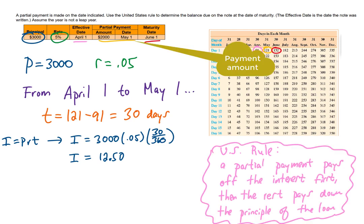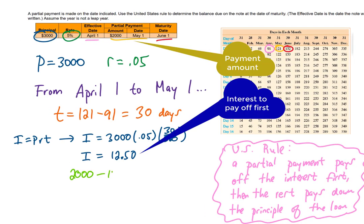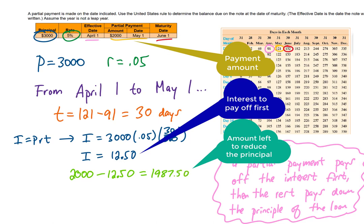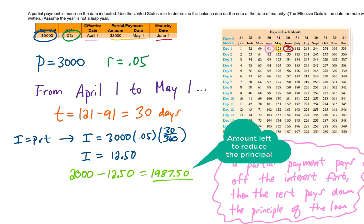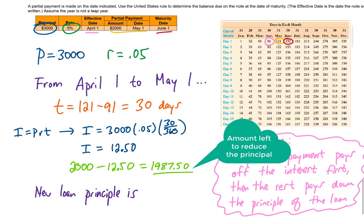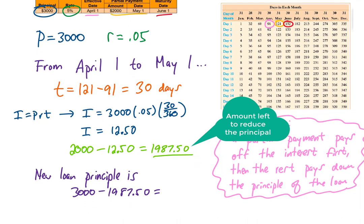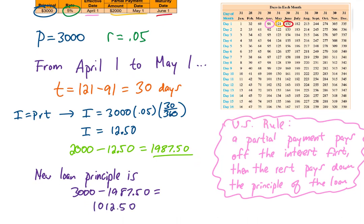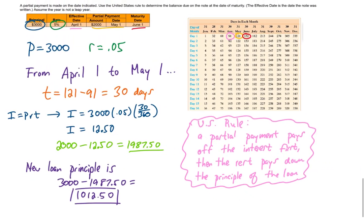What that means is from this $2,000 partial payment, $12.50 of that is going to pay off the interest that accrued. That leaves $1,987.50 to reduce the principal of the loan. The loan started at $3,000. So the new principal of the loan is going to be that $3,000 minus the $1,987.50 that we had left from our partial payment, which makes our new principal amount $1,012.50. That is the new principal as of May 1st.